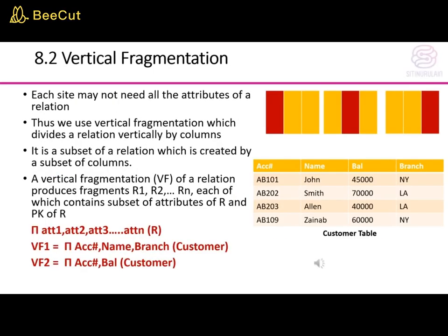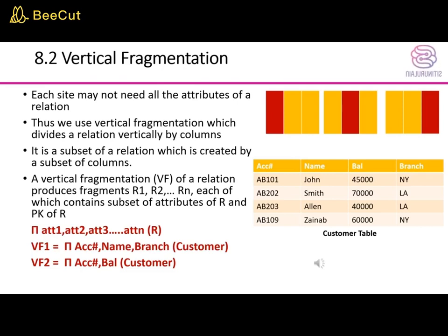This is an example of vertical fragmentation. Each site may not need all the attributes of a relation, so we use vertical fragmentation, which divides a relation vertically by columns. It is a subset of a relation created by a subset of columns. A vertical fragmentation of relation R produces fragments R1, R2, ..., Rn, each containing a subset of attributes of R. For example, VF1 selects account number, name, and branch from the customer table, while VF2 selects only account number and balance.